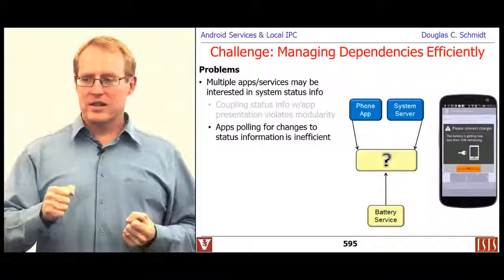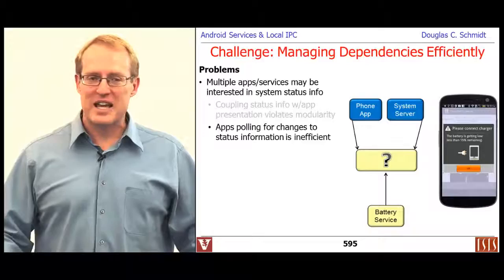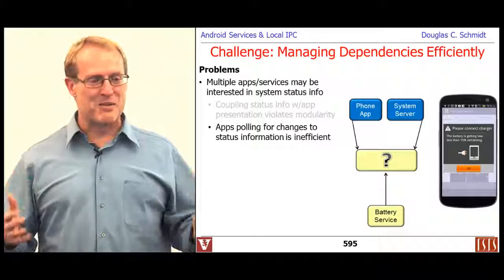Having the app continually ask 'are you running low on battery?' repeatedly is wasteful — you'll run low on battery just from asking whether you're low on battery. It's like having your kids say 'are we there yet?' over and over — it doesn't make it go any faster. A polling-based model isn't the right way to go either.